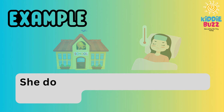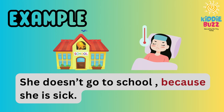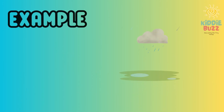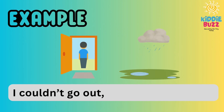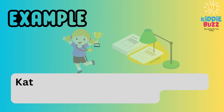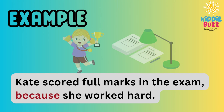Conjunction BECAUSE. For example, 'She doesn't go to school because she is sick.' The reason is given after the conjunction BECAUSE. Another example: 'I couldn't go out because of the rain.' The reason — the rain — comes after BECAUSE. Another example: 'Kate scored full marks in the exam because she worked hard.' The conjunction in this sentence is BECAUSE.